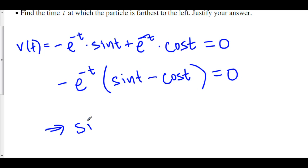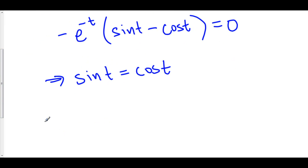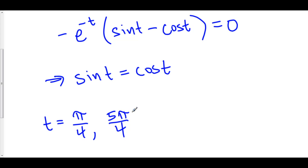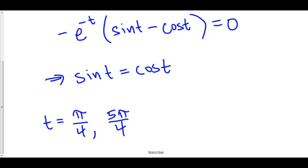Sine t equals cosine t occurs at 45 degrees, or pi over 4 in radians. Between 0 and 2pi, this occurs at t equals pi over 4 and at pi plus pi over 4, which is 5pi over 4. So the velocity equals 0 at t equals pi over 4 and t equals 5pi over 4.